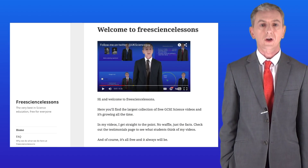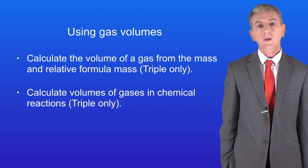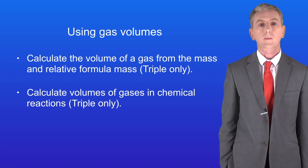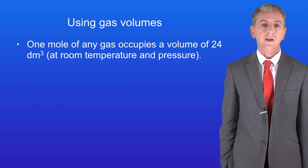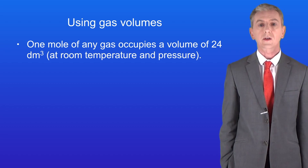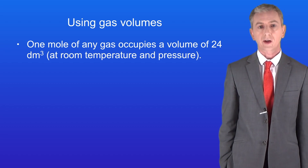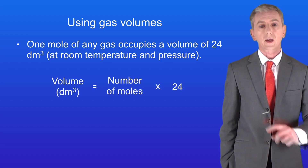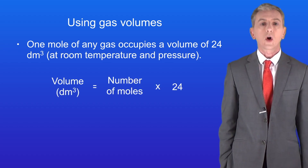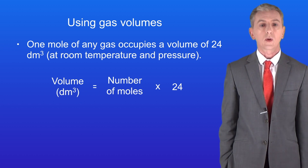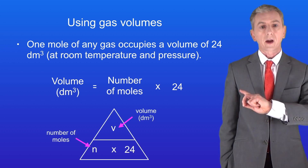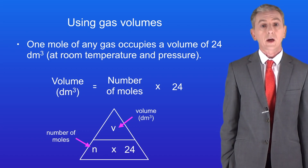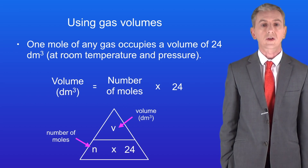Hi and welcome back to freesizelessons.co.uk. By the end of this video you should be able to calculate volumes of gases in chemical reactions. In the last video we saw that one mole of any gas occupies a volume of 24 decimetres cubed at room temperature and pressure. So if we know the number of moles of a gas we can calculate the volume by using this equation: the volume in decimetres cubed is the number of moles multiplied by 24, and here's a triangle if you prefer to use these.